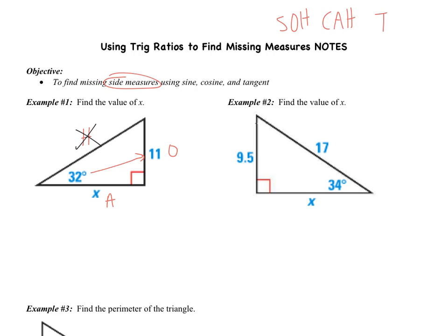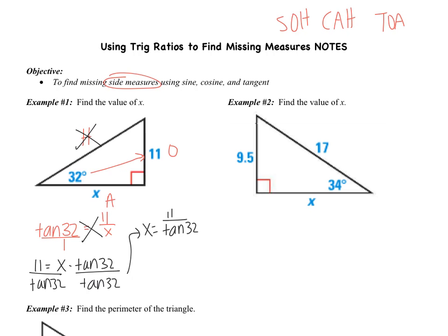we notice that tangent has opposite and adjacent. So I'm going to say that the tangent of 32 equals 11 over x, and then I need to find x. Now tangent of 32, that's just a number. So I'm going to put that over 1, and then we're going to do cross products. 11 times 1 is 11, so I get 11 equals x times the tangent of 32. To undo that multiplication, I'm going to divide both sides by the tangent of 32.